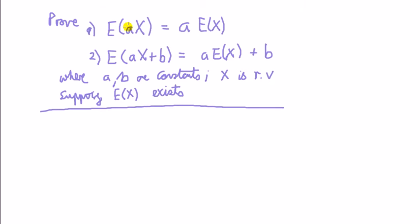Expected value of a constant times a random variable is equal to the constant times the random variable is the first thing we're going to show, and then in a similar fashion we're going to extend the proof to this: that the expected value of a sum of a constant times a random variable plus a constant is equal to a constant times the expected value of the random variable plus a constant.